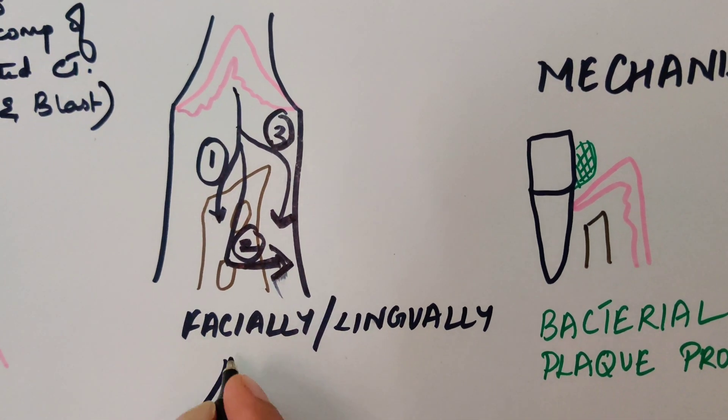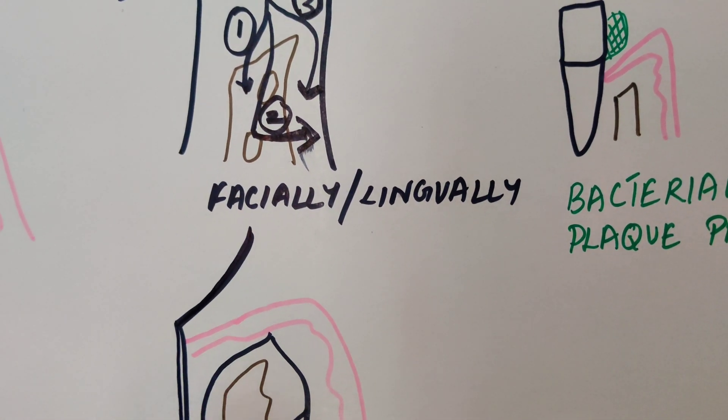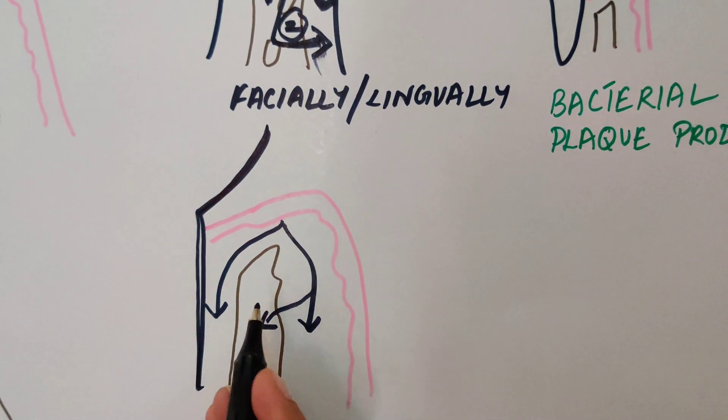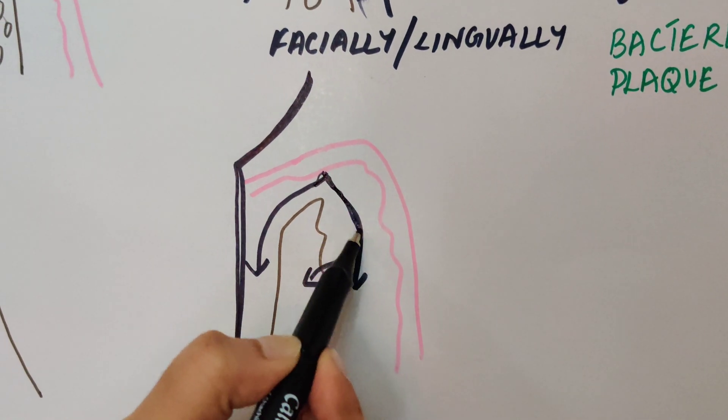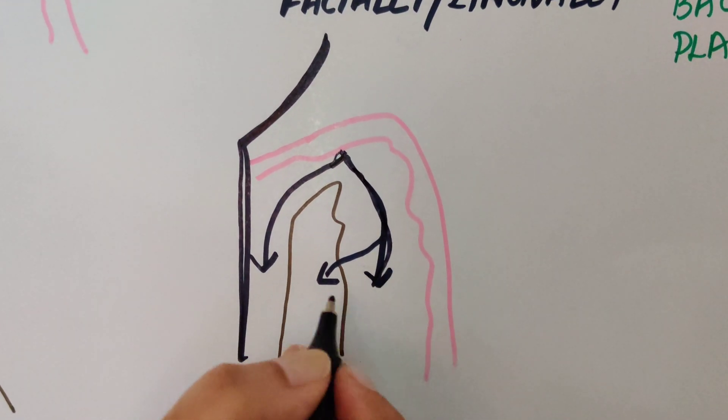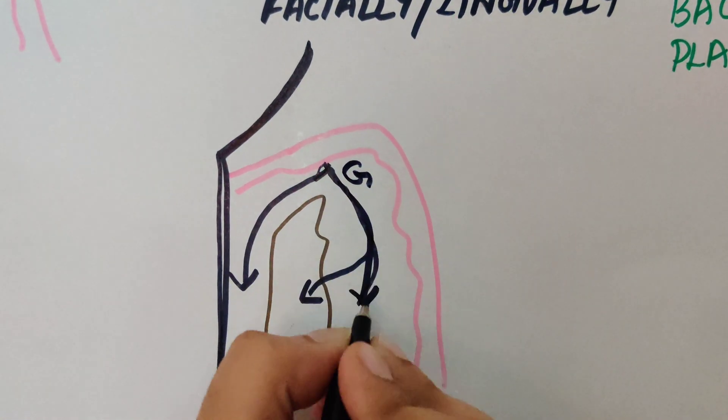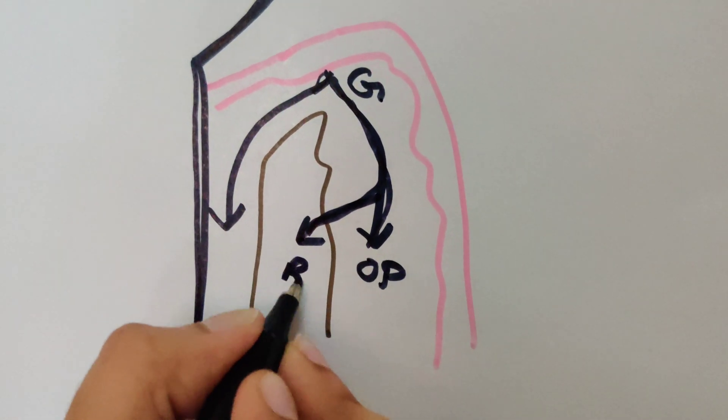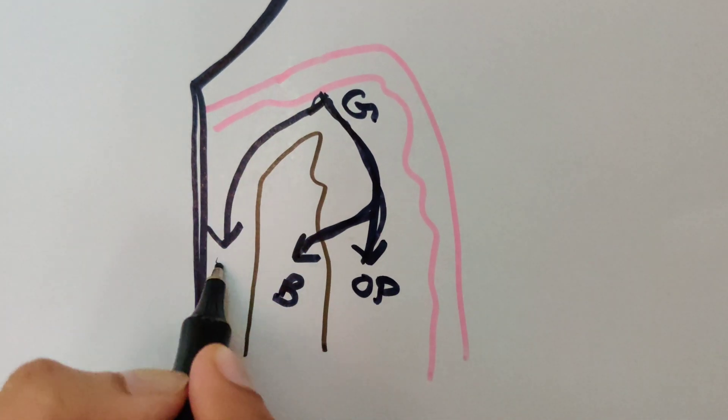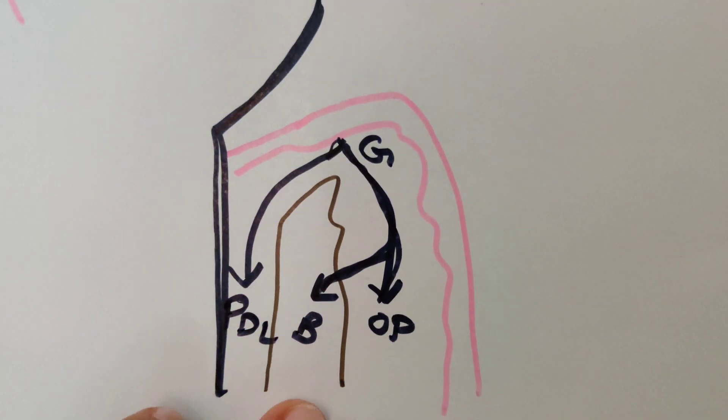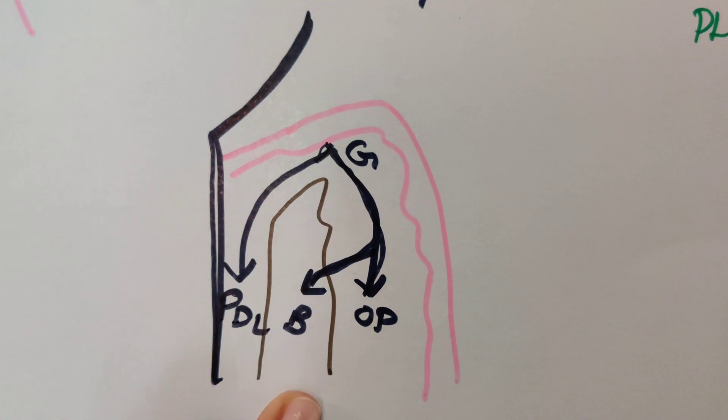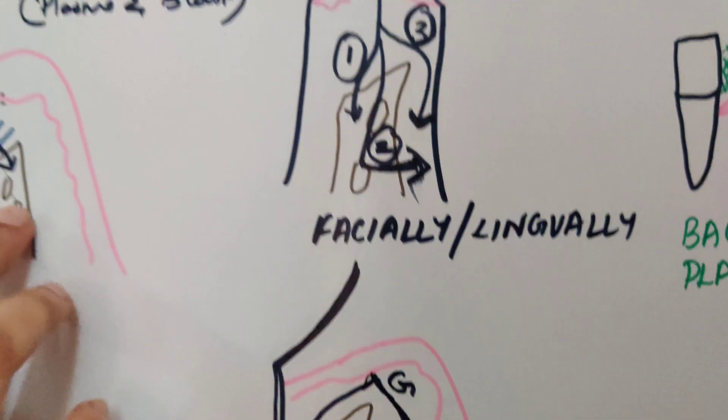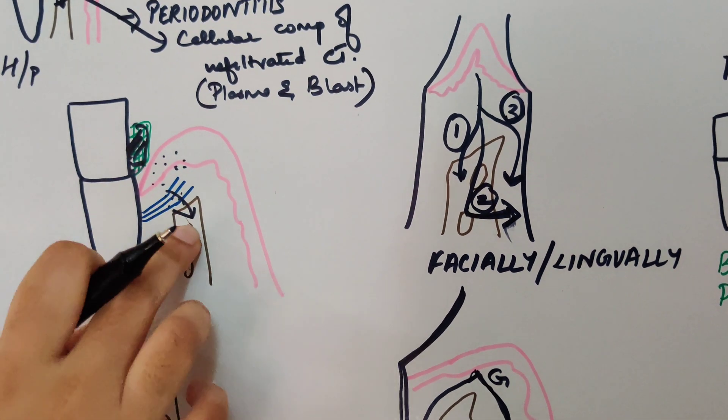Next we'll see this is the facial surface of the tooth, and how is the inflammation spreading here. First it will be from gingiva to the outer periosteum, then from the outer periosteum into the bone, and from the gingiva into the periodontal ligament. So these are the three ways how the gingival inflammation extends into the bone.